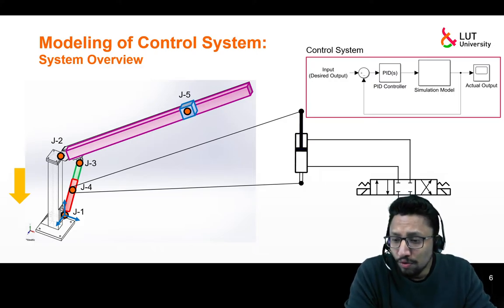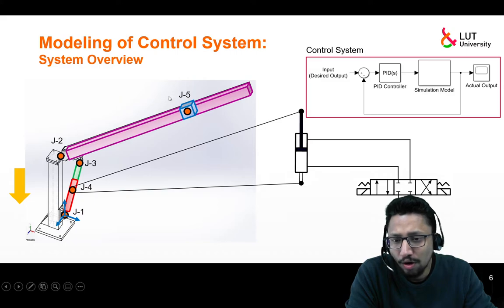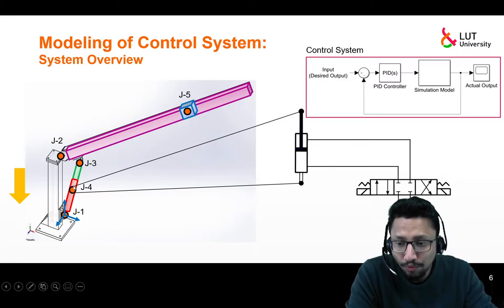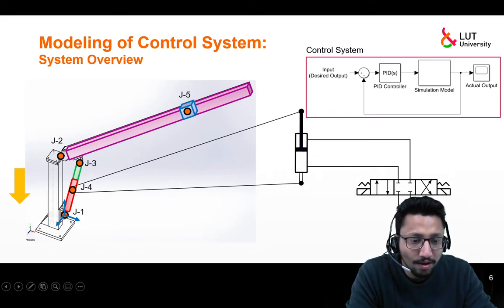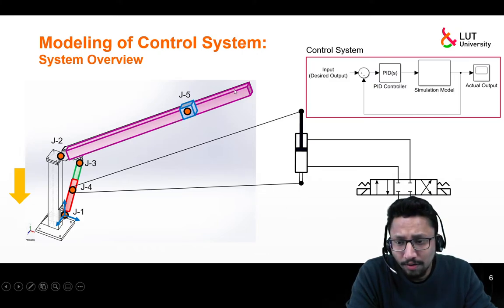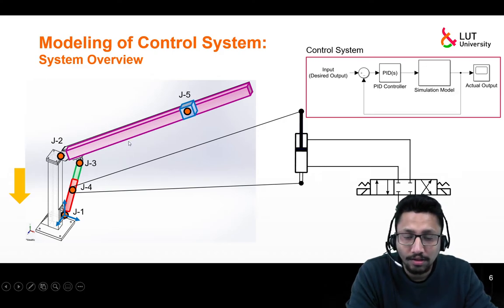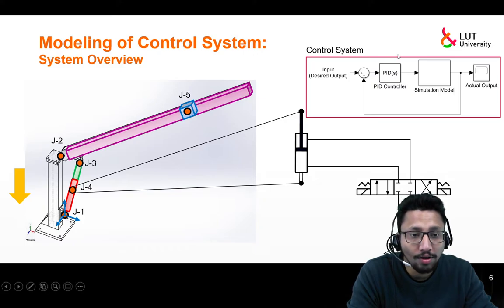So far we have modeled a mechanical structure: the pillar, the lift arm, the cylinder, and the piston — all connected with certain joints. In guided tutorial 2 we modeled the hydraulic actuator, which was connected across a prismatic joint, and included connecting hoses, a 3/4 directional control valve, a tank, and a variable displacement pressure-compensated pump. In guided tutorial 3 we modeled the lift arm as a flexible structure.